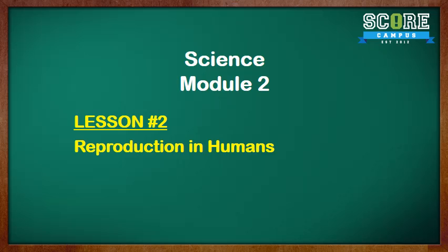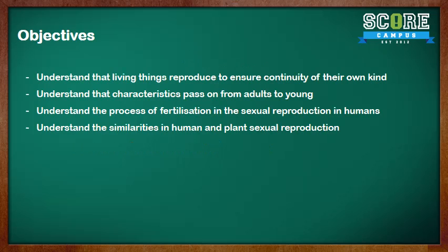This is Science, Module 2, Lesson 2: Reproduction in Humans. After this lesson, you should be able to understand that living things reproduce to ensure continuity of their own kind, that characteristics pass on from parents to young, the process of fertilization in sexual reproduction in humans, and the similarities in human and plant sexual reproduction.